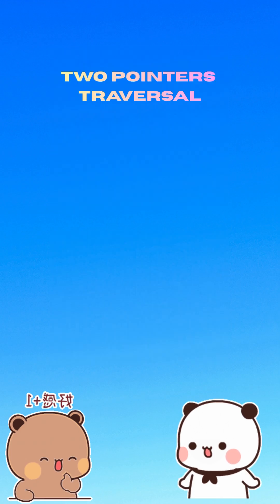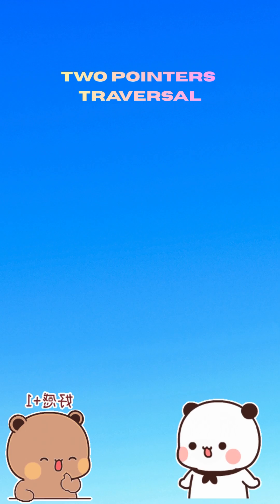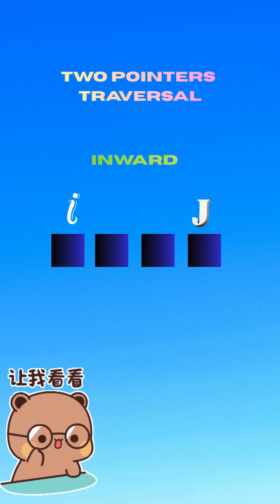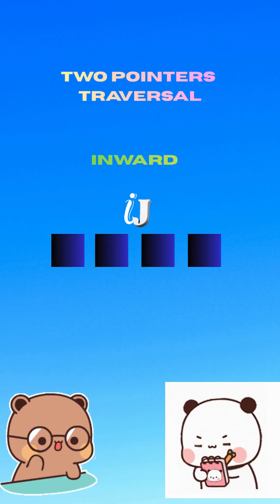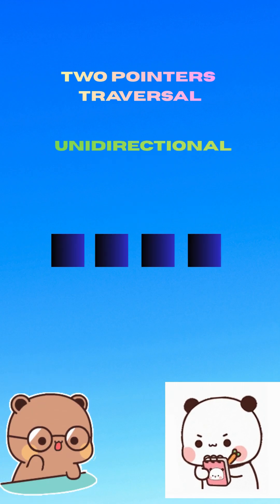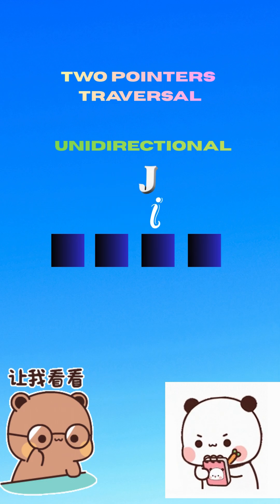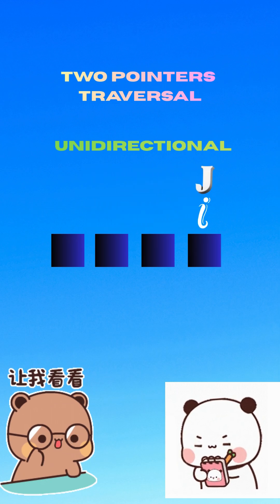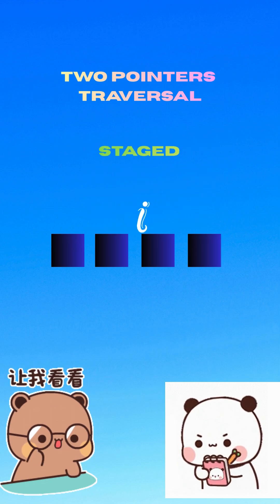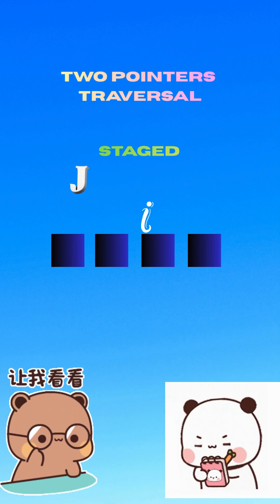All right, genius — are there different ways to use two-pointers? Three, actually. Inward: pointers start at opposite ends. Unidirectional: both walk from the same side. Staged: one moves first, and the second starts only when a condition is met.